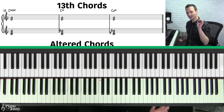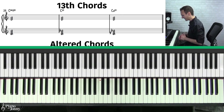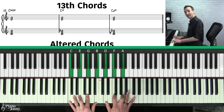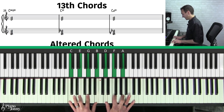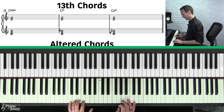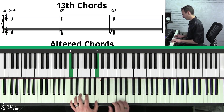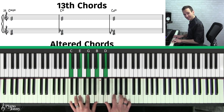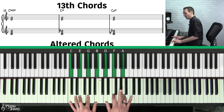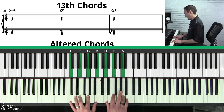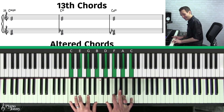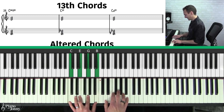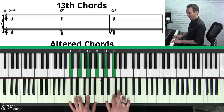Next, we're going to talk about the 13 extension. If we continue stacking thirds from the 11, we end up with an A — this is a 13th interval. If you count all the notes: 1, 2, 3, 4, 5, 6, 7, 8, 9, 10, 11, 12, 13. We call it a 13 because we're stacking thirds all the way up to that A. If you stack another third, you actually end up on the C, your starting note. So you can only have up to three chord extensions: the nine, the 11, and the 13.